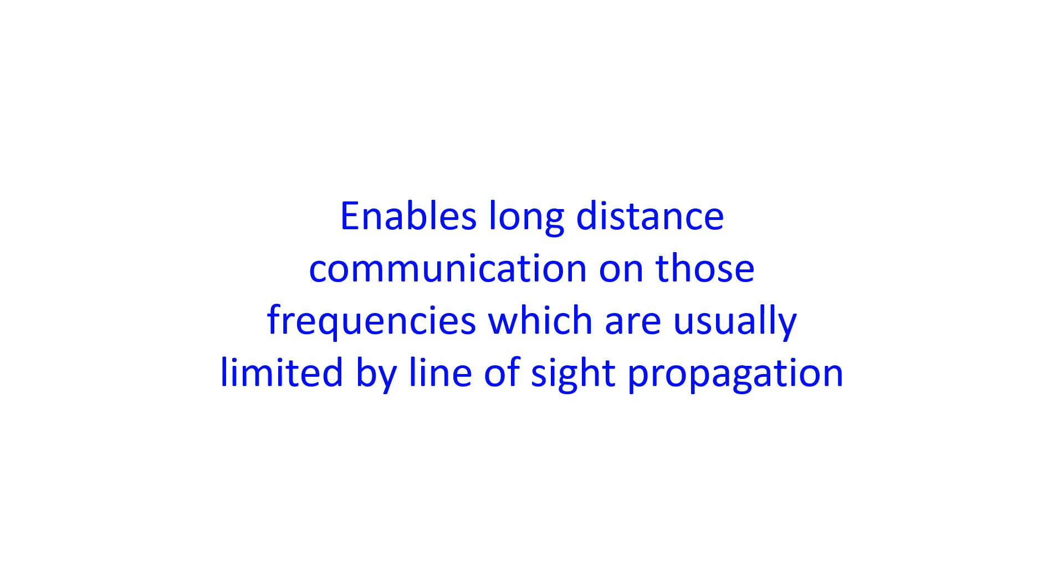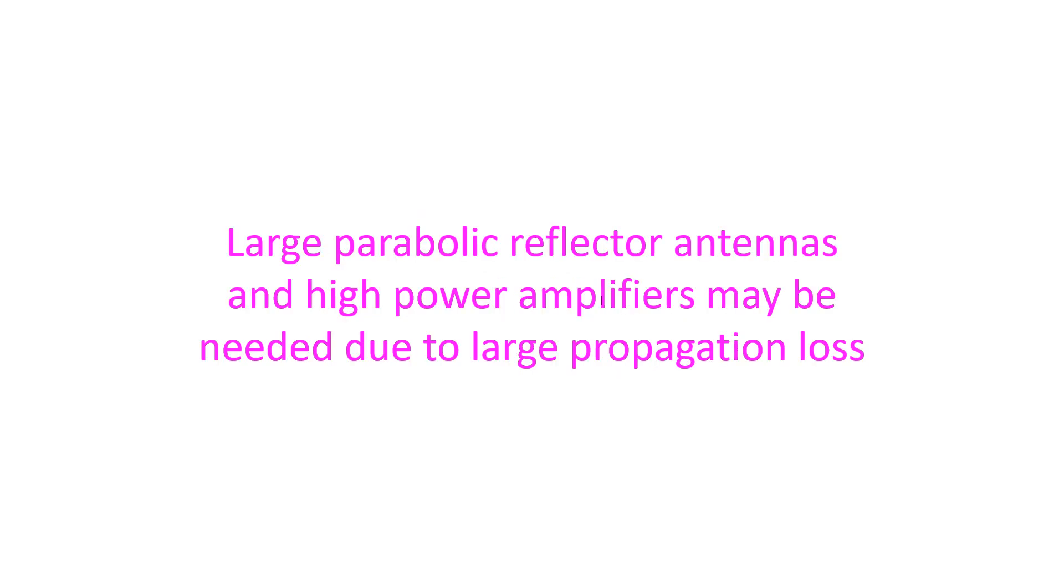Tropospheric scatter was discovered in the 1930s and developed for over the horizon beyond line of sight communication in the 1950s. It was meant for use when cable links and microwave links were not feasible for communication over the horizon.